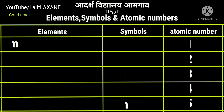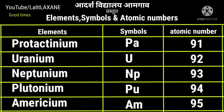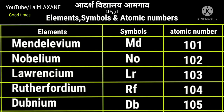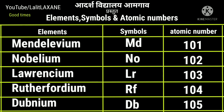With atomic number 91, protactinium with symbol Pa. Then uranium U with atomic number 92. Neptunium Np, atomic number 93. Plutonium Pu, atomic number 94 and americium Am with atomic number 95. With atomic number 96, curium Cm. Berkelium Bk, 97. Californium Cf with atomic number 98. Einsteinium Es, atomic number 99. With atomic number 100, fermium with symbol Fm. Mendelevium Md, atomic number 101. Nobelium No, atomic number 102. Lawrencium Lr with atomic number 103.